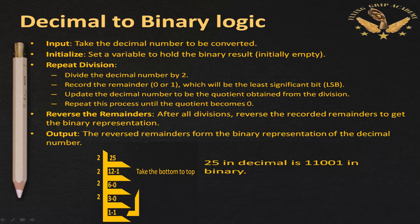The decimal to binary algorithm: take the decimal number to be converted, initialize a variable to hold the binary result as empty. Repeat the division by 2, record the remainder as the least significant bit, update the decimal number to be the quotient. Repeat until the quotient becomes 0. Reverse the recorded remainders to get the binary representation — the output will be 11001.